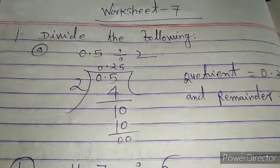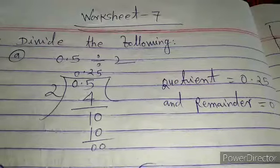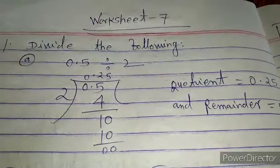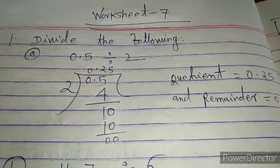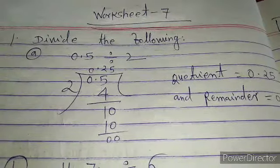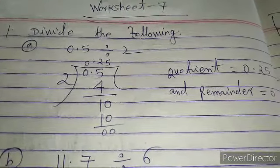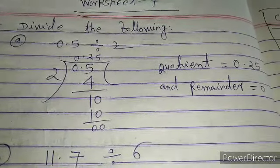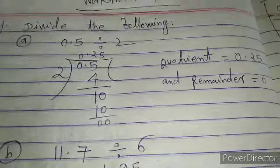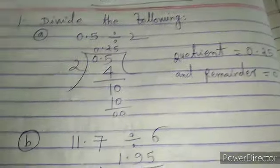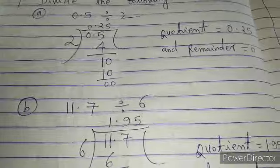Now we solve some questions from worksheet 7. Divide the following. In question A, divide 0.5 by 2. When we divide 0.5 by 2, we get remainder 1. We add a 0 to continue: 2×5 is 10, remainder is 0. Thus the quotient is 0.25 and remainder is 0.